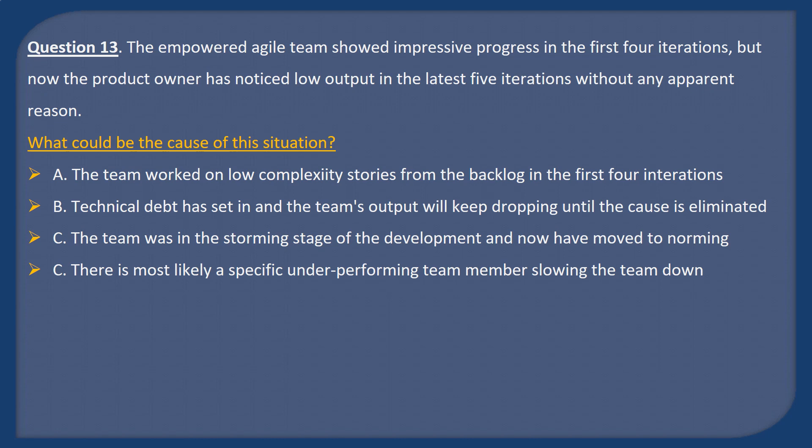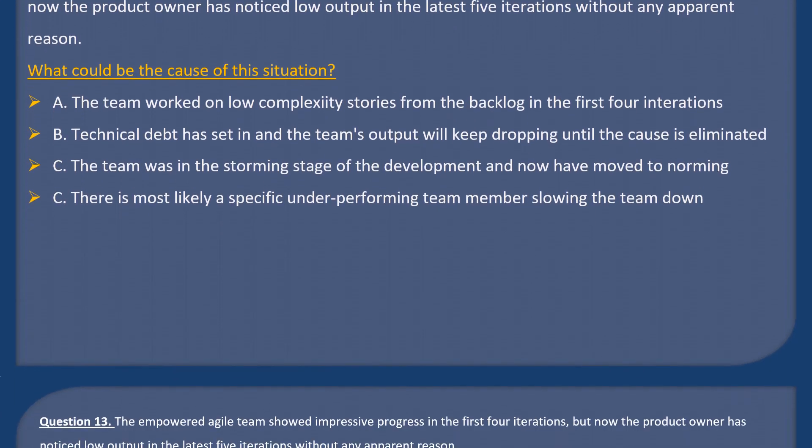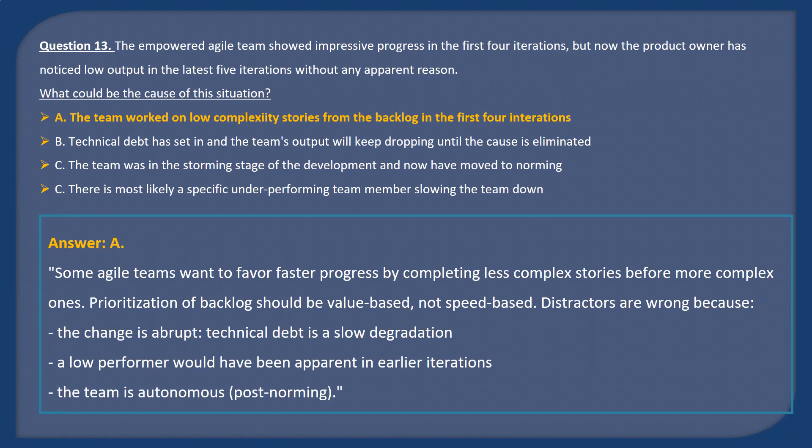Question 13. An empowered Agile team showed impressive progress in the first four iterations, but now the product owner has noticed low output in the latest five iterations without any apparent reason. What could be the cause of this situation? A: The team worked on low-complexity stories from the backlog in the first four iterations. B: Technical debt has set in and the team's output will keep dropping until the cause is eliminated. C: The team was in the storming stage of development and have now moved to norming. D: There is most likely a specific underperforming team member slowing the team down.